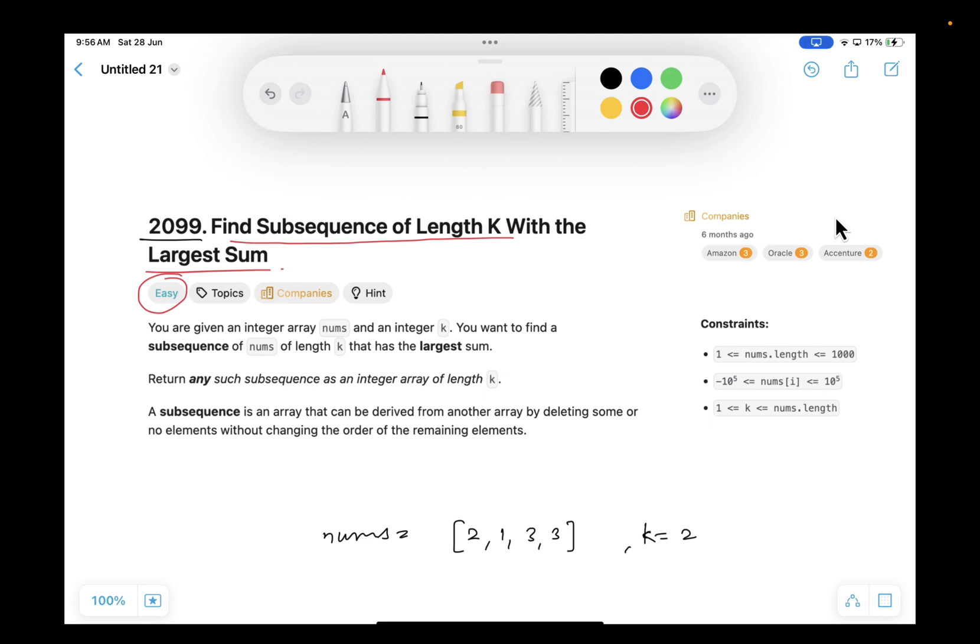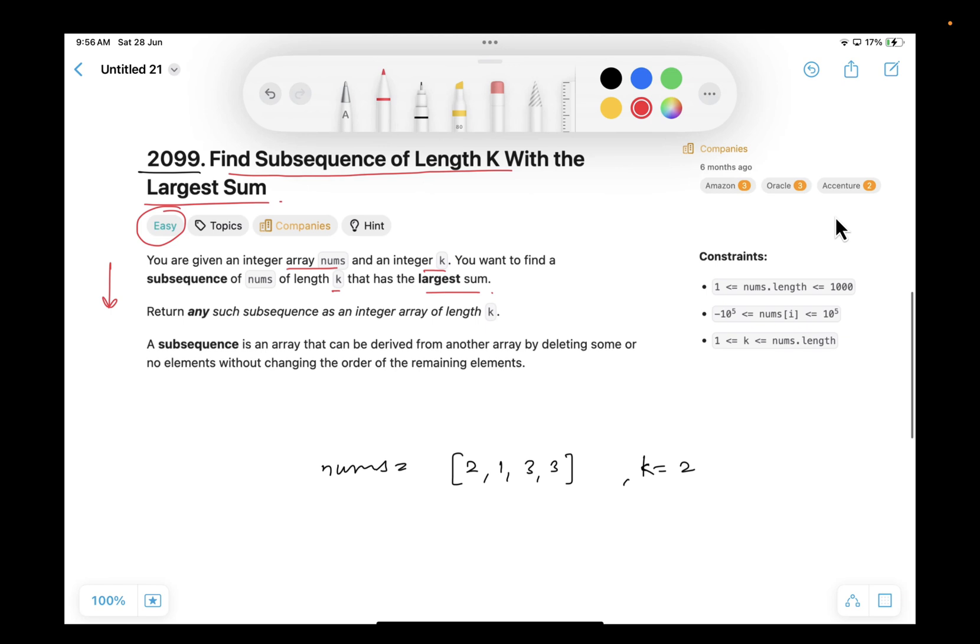Let's have a look at the problem statement. Here we are given an integer array nums and an integer k, and you want to find a subsequence of nums of length k such that it has the largest sum. They are saying a nums integer array is given to us and k integer is given to us, and you have to find a subsequence from this nums of size k. It means only two items I can pick in order. When we are going from left to right,